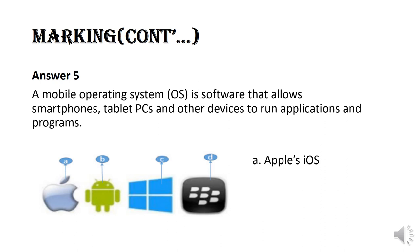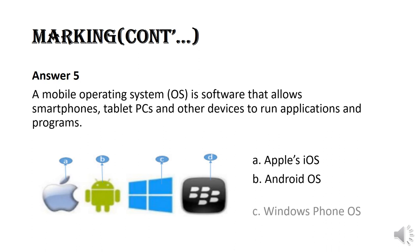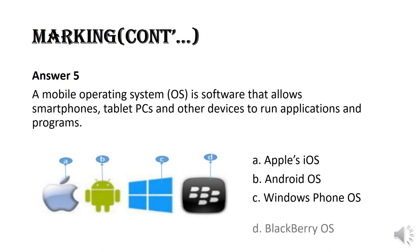Logo A represents Apple iOS. Logo B represents Android OS. The operating system denoted by C is Windows Phone OS, and the mobile operating system denoted by letter D is BlackBerry OS.